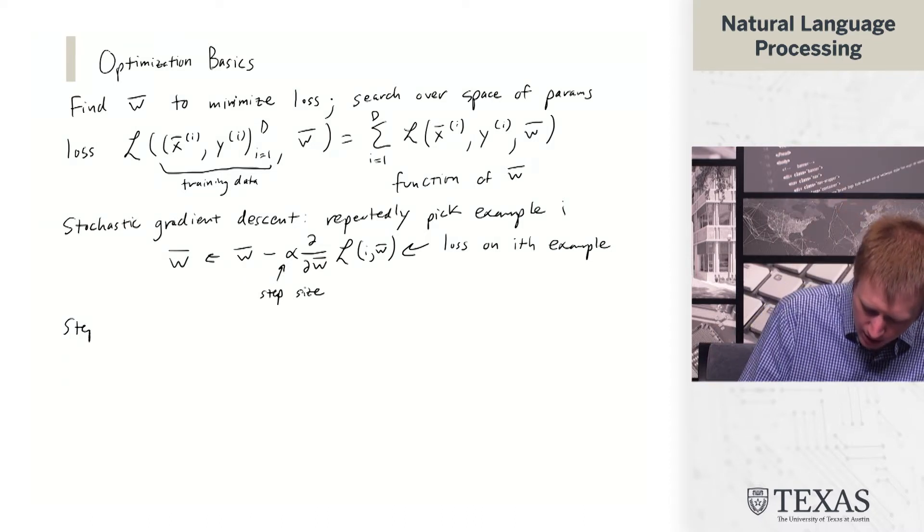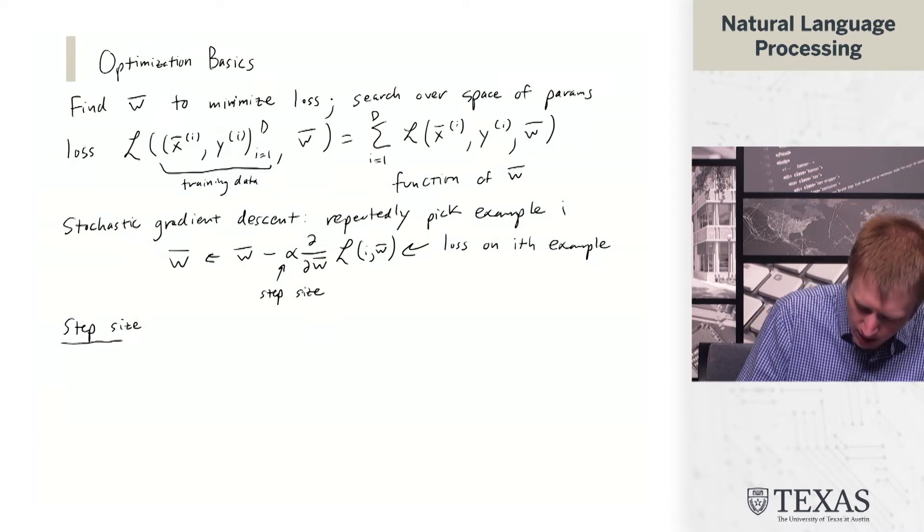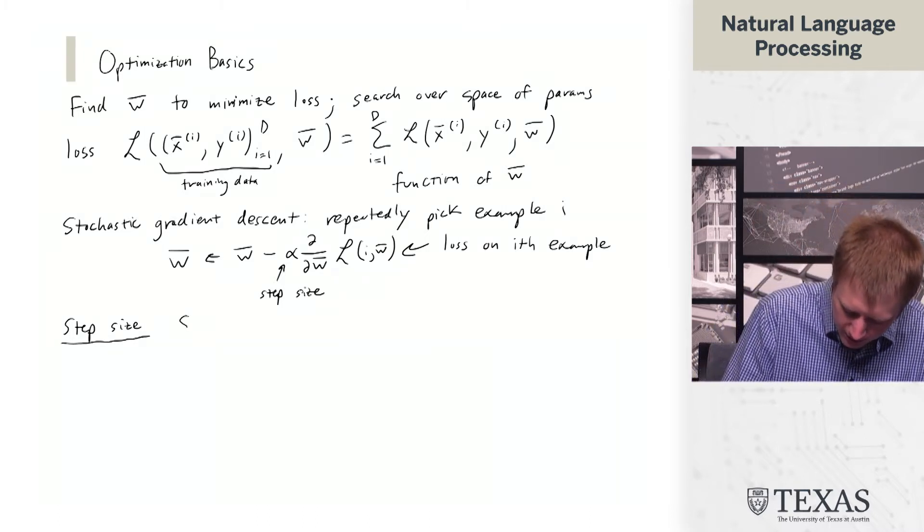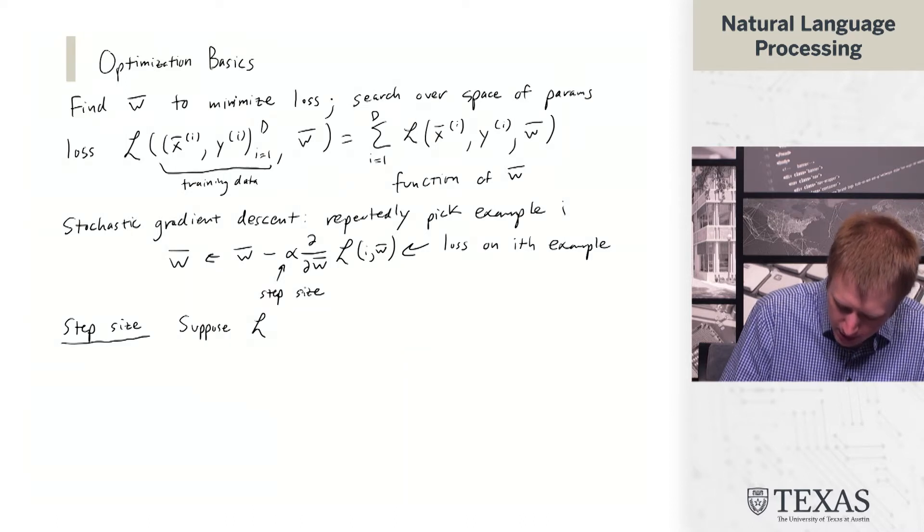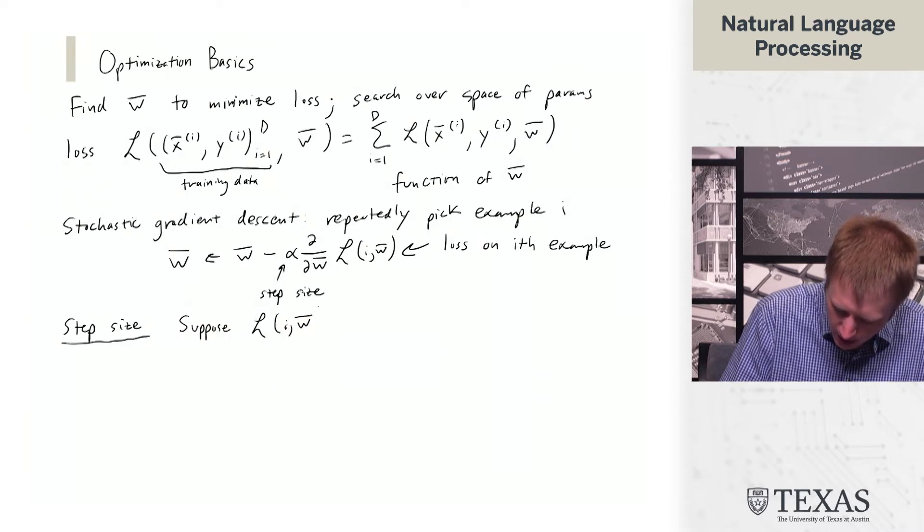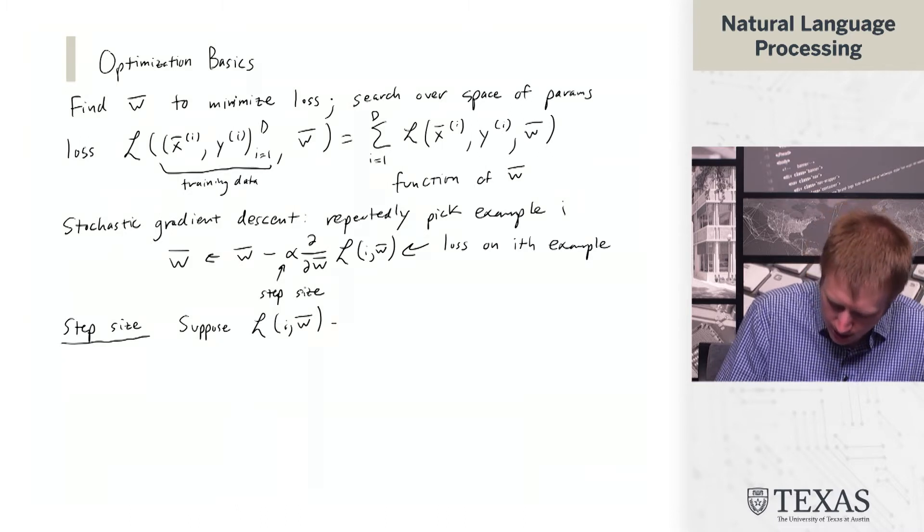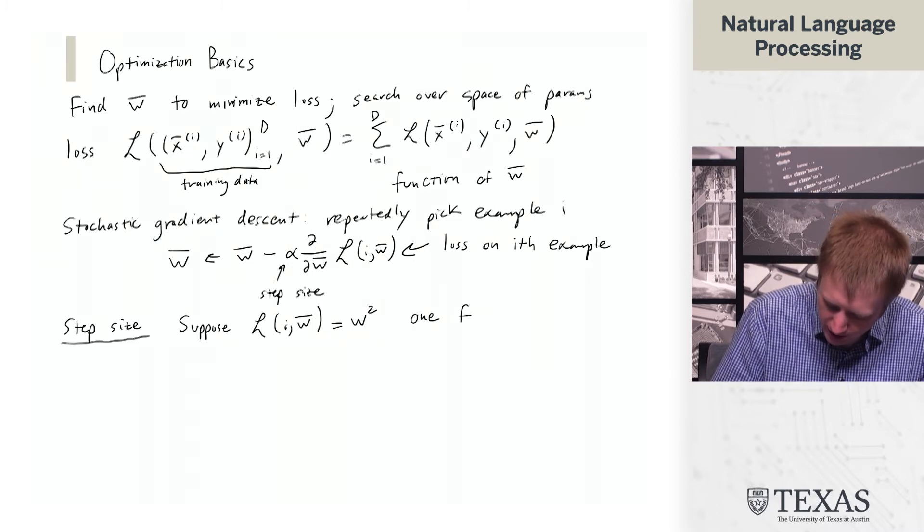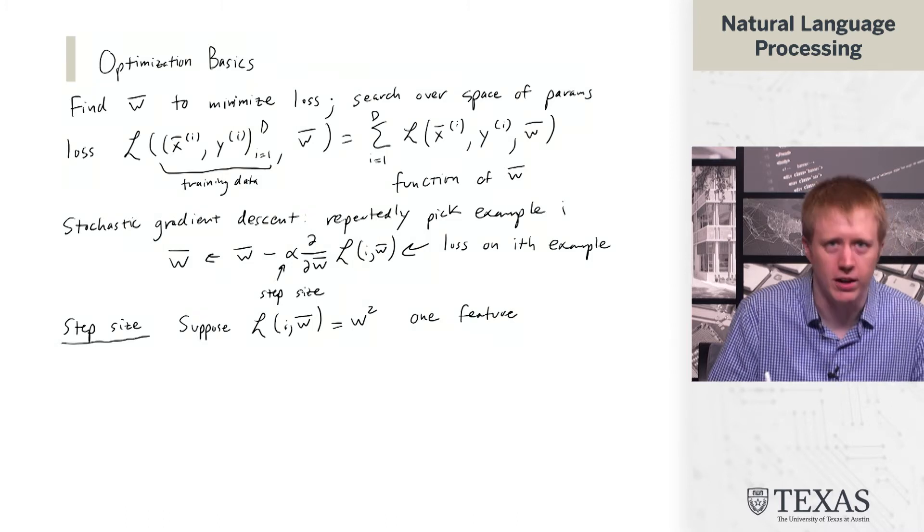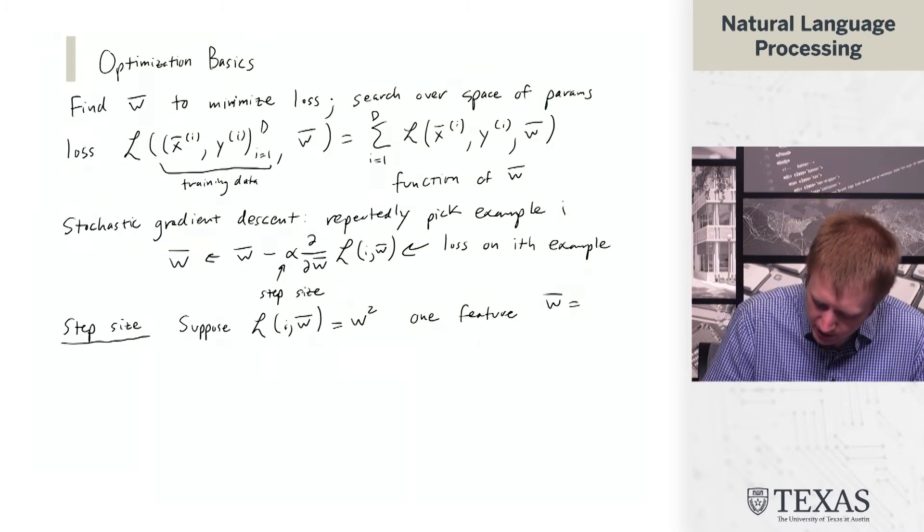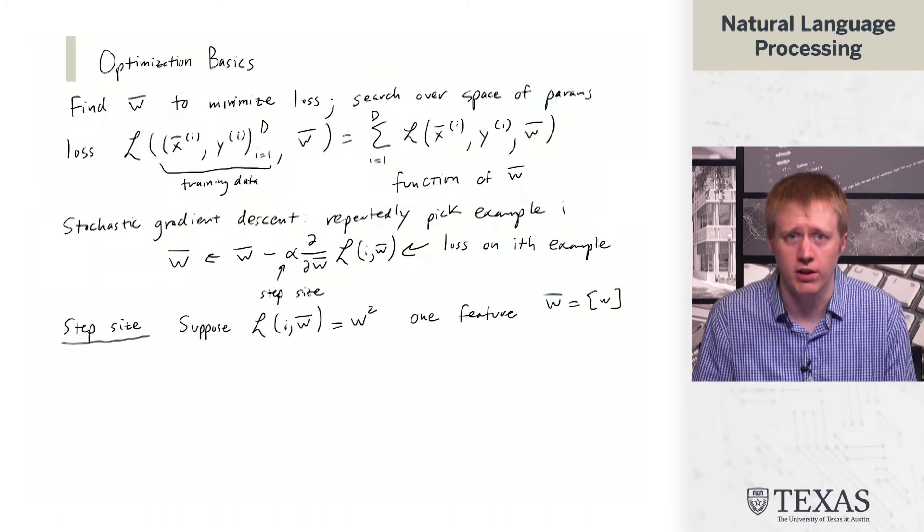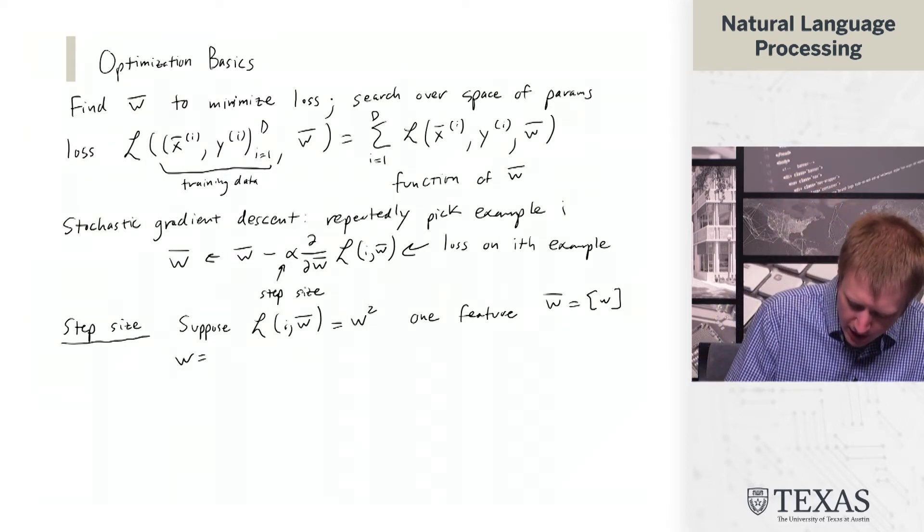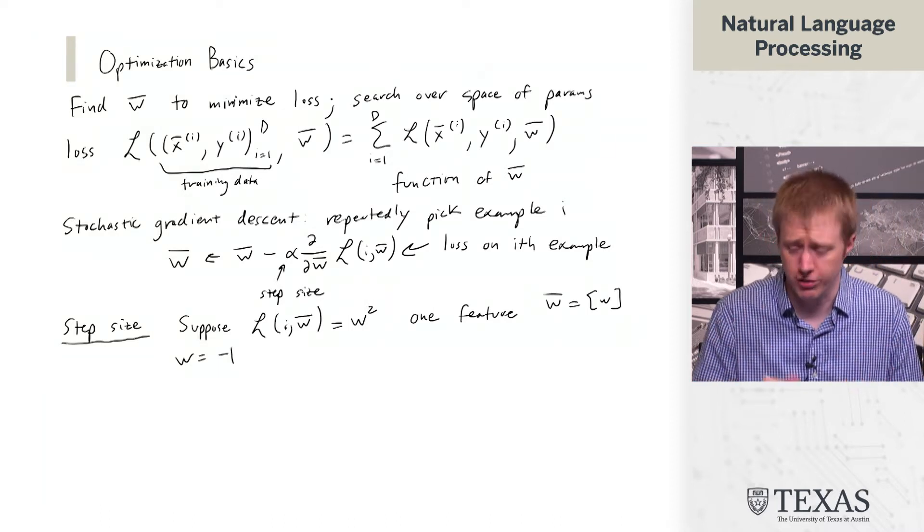Let's see an example of why step size matters. Suppose L equals W squared, and there's just one feature here. Basically W is just a single vector with a single coordinate W in it.